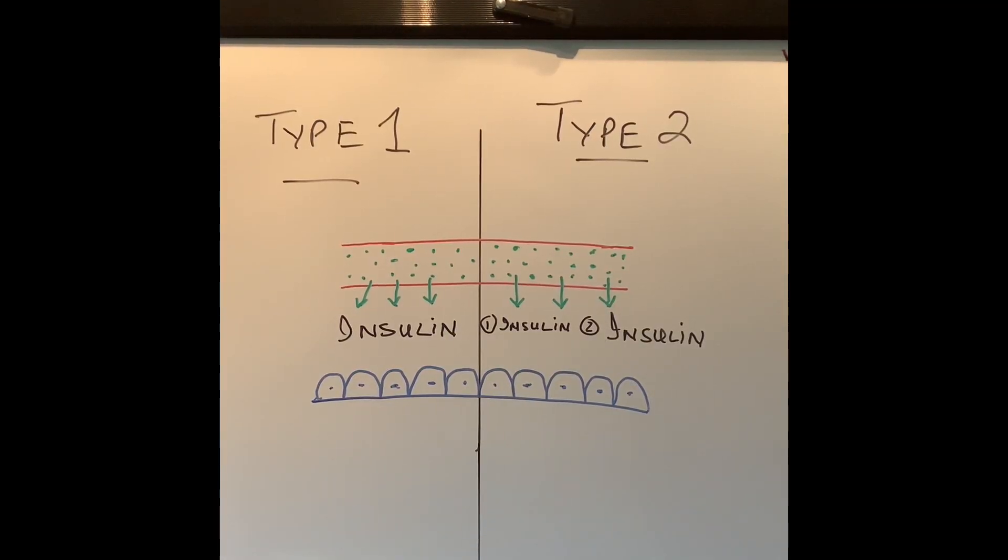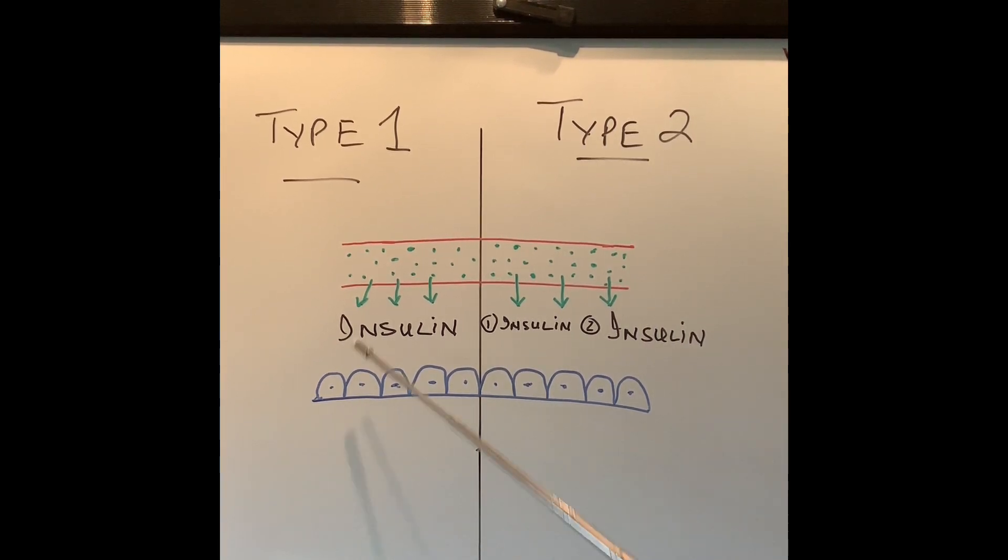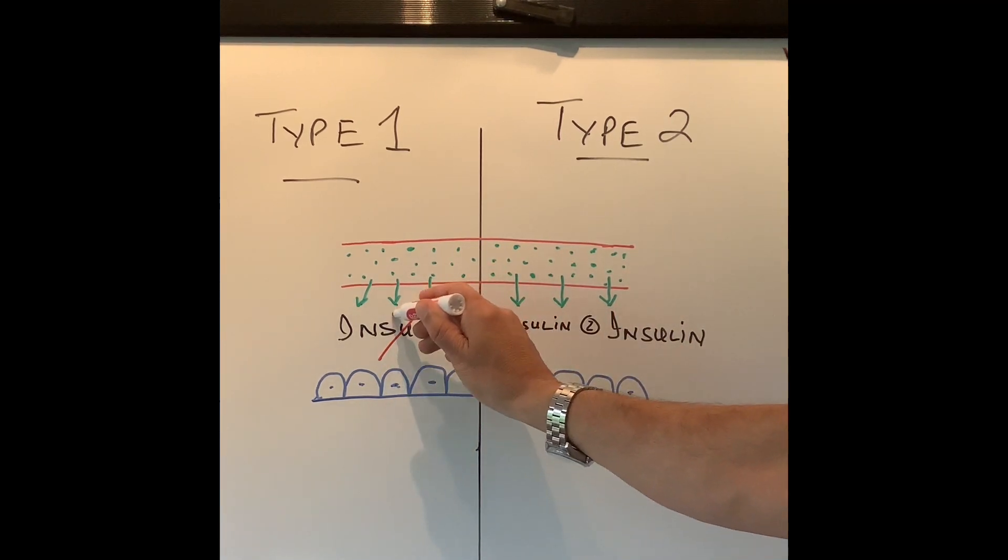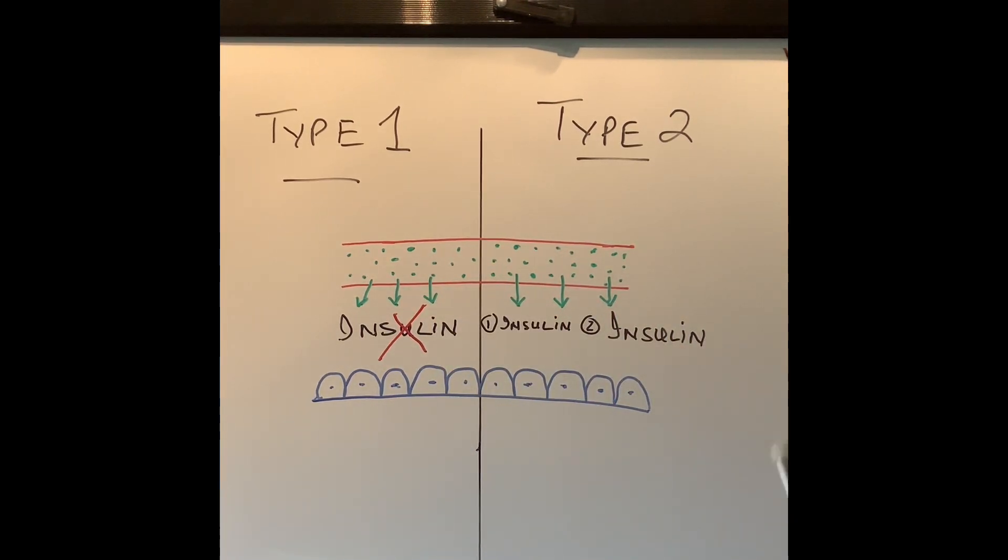So what is the second difference in type 1 and type 2 diabetes? The second difference is in type 1 diabetes there is no insulin at all. So the glucose from the blood vessels can't go into the cells. In type 2 diabetes the problem is a bit different. Either the insulin is very little or the insulin is not working normally. So insulin is present but it is not working.